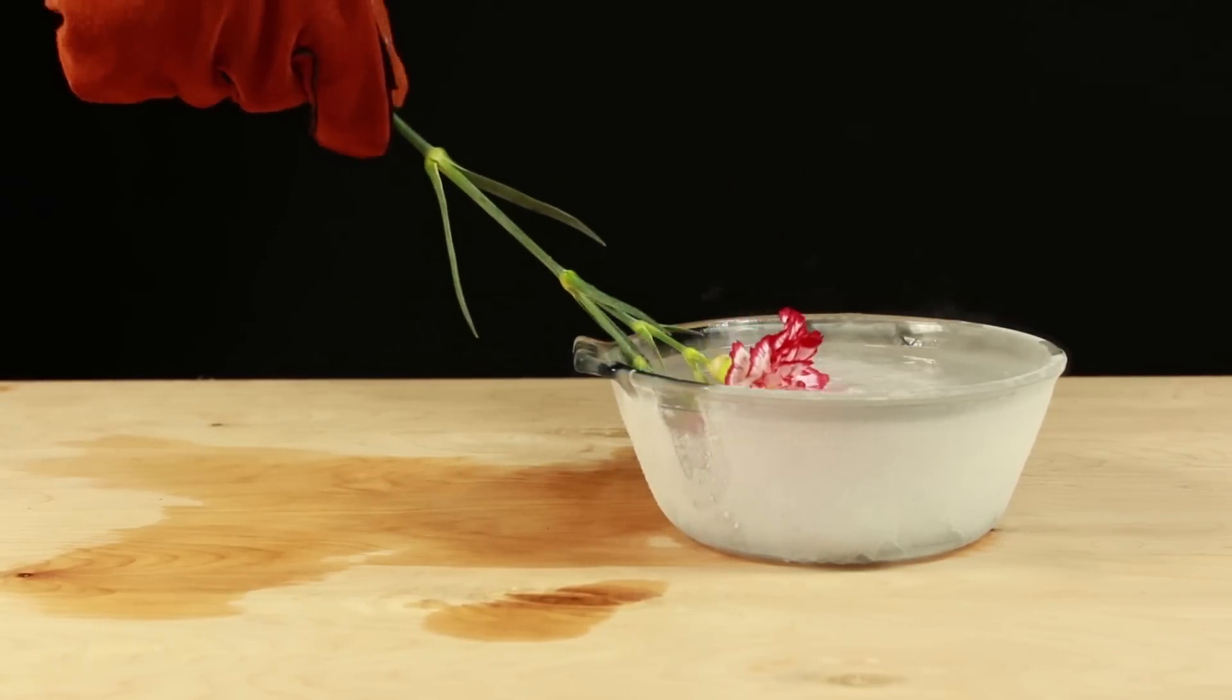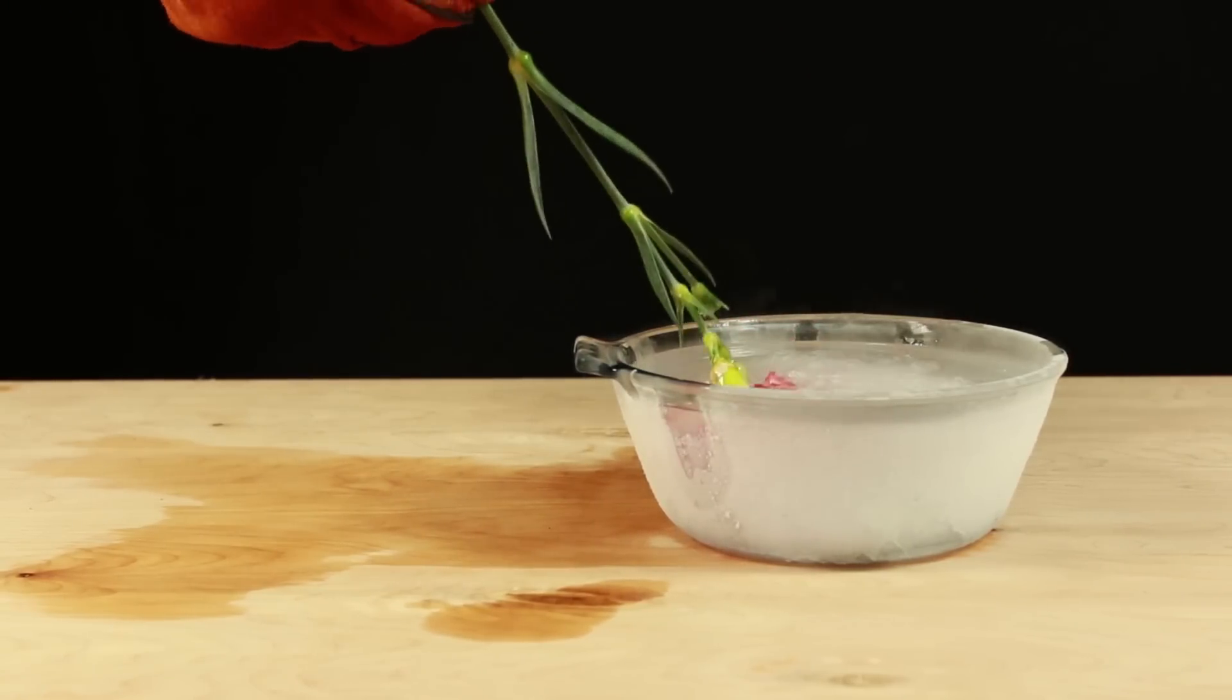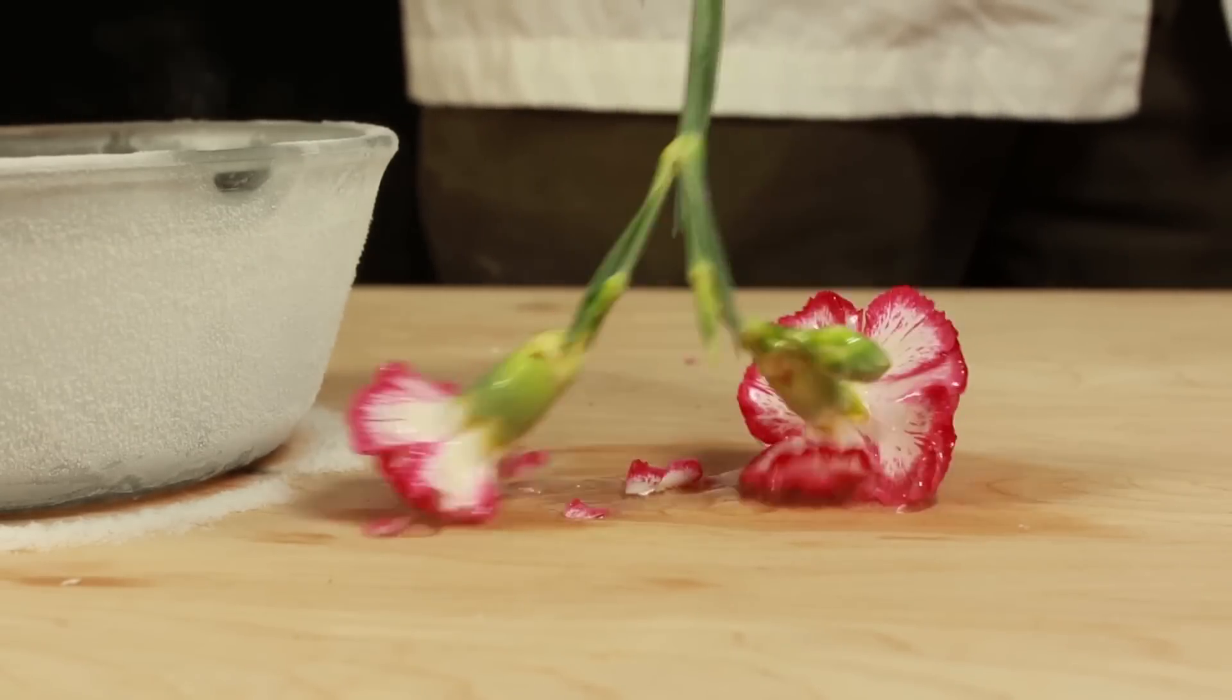For example, after submerging a flower for only a few seconds in the isopropyl alcohol it will become brittle and crispy to the touch.